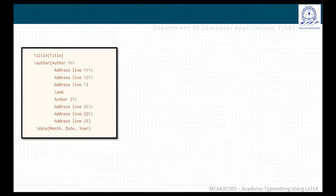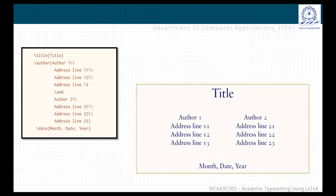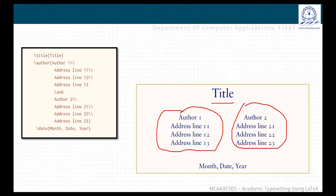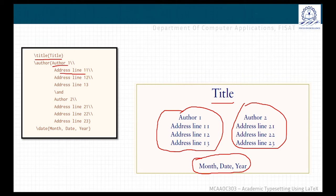This is another version of title. Like the previous code snippet, this will also produce a title but more fields are added here. This particular format is generally used when there are more authors. There is a title, author 1 and his affiliations, then author 2 and his or her affiliations, and at the bottom line you can see date in a specific format. In order to typeset the title, you can use \title keyword. Different fields of an author are given by \author, then give the name author 1. After that, two backslashes, then address line 1 followed by two backslashes. Each field is separated by two backslashes.